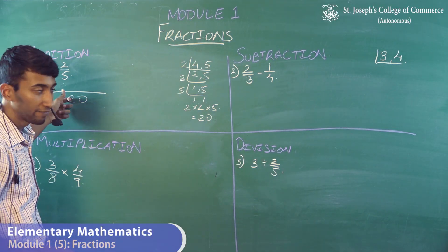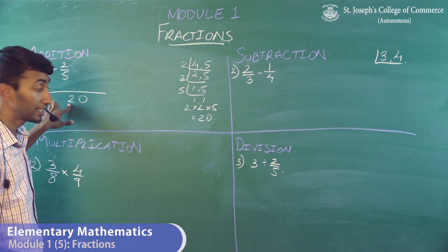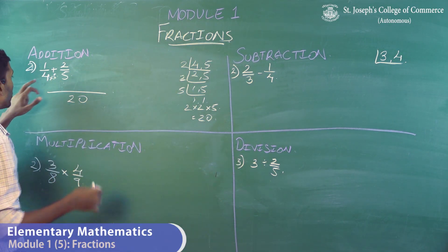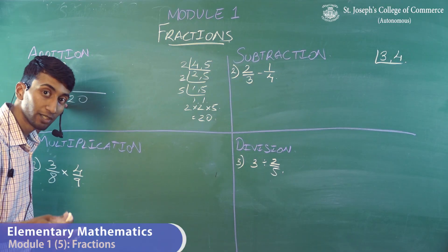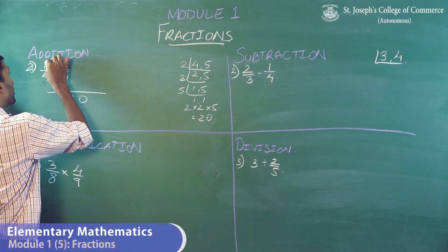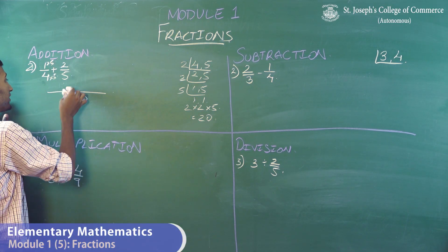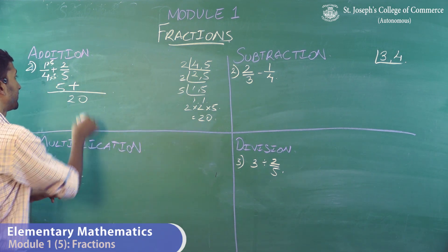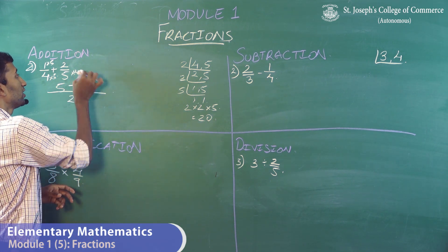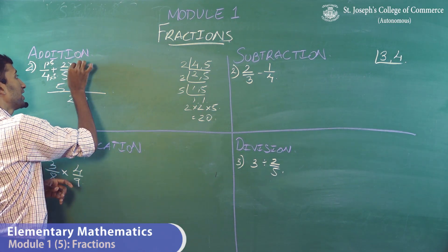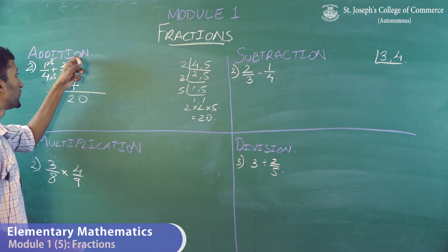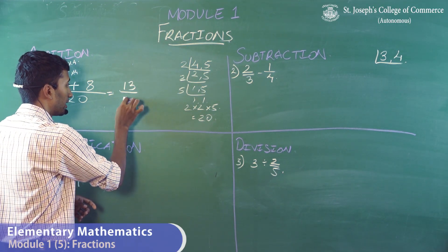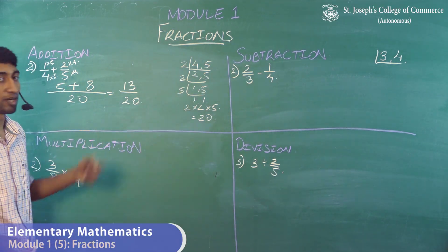4 fives are 20. Since 4 is converted to 20, 4 into 5 will give you 20. If you're multiplying the denominator by 5, you should multiply the numerator also by 5. So 1 into 5 will give you 5, plus, and 5 fours are 20. 5 into 4 will give you 20. If you're multiplying the denominator by 4, multiply the numerator also by 4. So 4 twos are 8. So 5 plus 8 will give you 13 by 20. This is how you add.